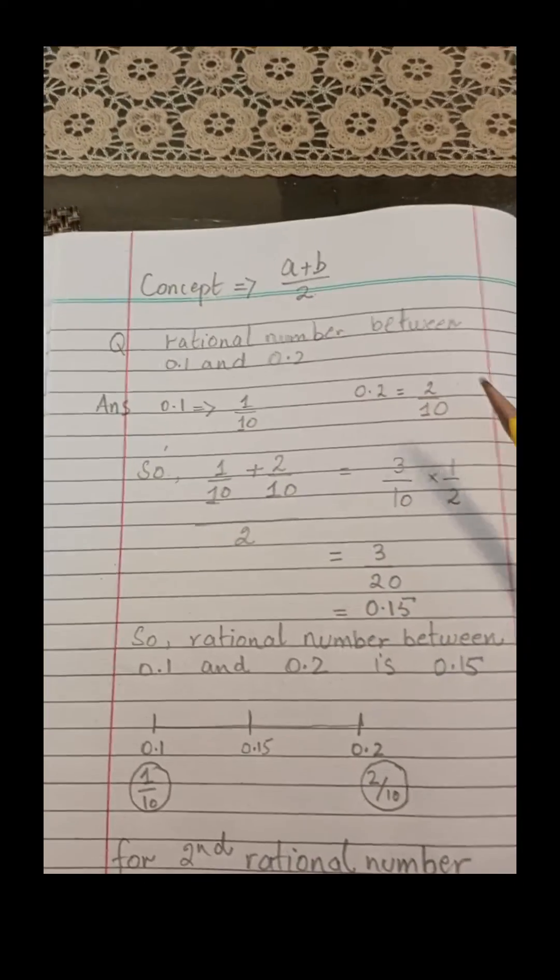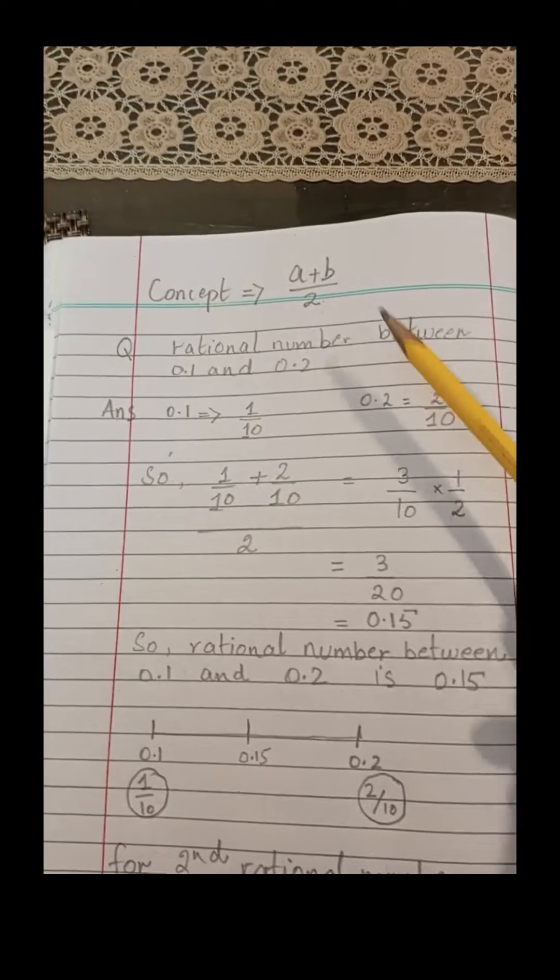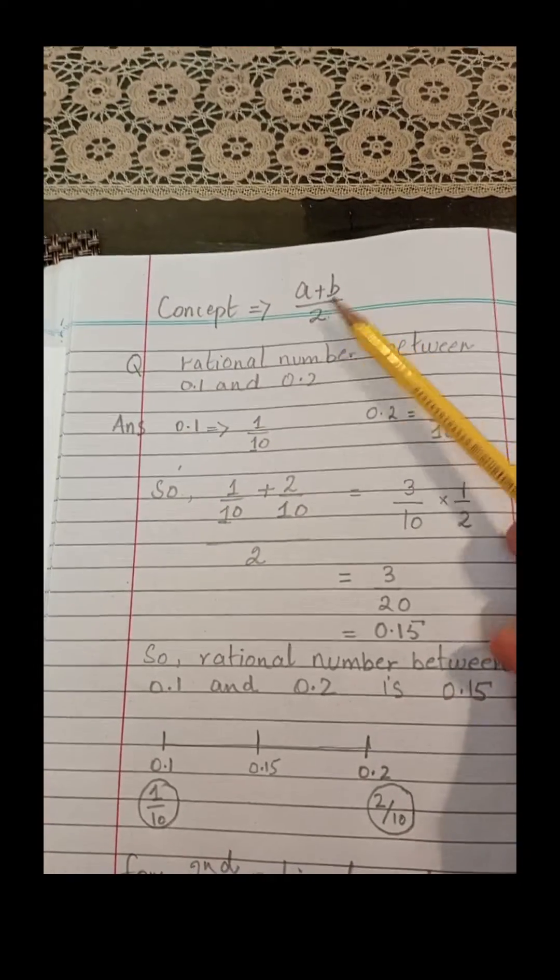To find rational numbers between 0.1 and 0.2, we use the basic concept of a plus b divided by 2.